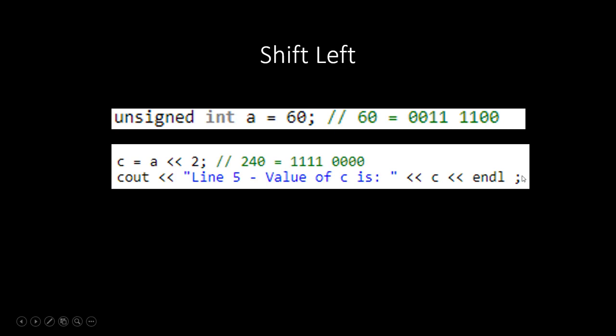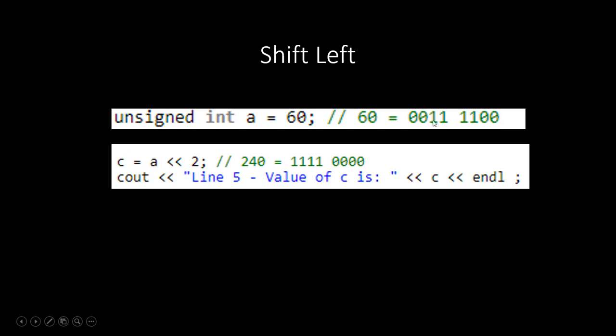Our final two operations are shift left and shift right. For shift left, we have 60 represented as 0, 0, 1, 1, 1, 1, 0, 0. Shifting left by 2 moves all bits two positions to the left, resulting in 1, 1, 1, 1, 0, 0, 0, 0, which is equal to 240.